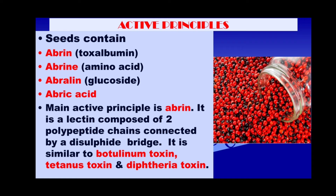With regard to active or toxic principles, the seeds are the most toxic part of the plant. They contain a number of toxic active principles, the most toxic being Abrin, which is a toxic protein or toxalbumin. You also have Abrine, which is an amino acid; Abriline, which is a glucoside; and Abric acid. The most important is Abrin, which is a lectin composed of two polypeptide chains connected by a disulfide bridge. It is similar to some other deadly toxins like botulinum, tetanus, and diphtheria.